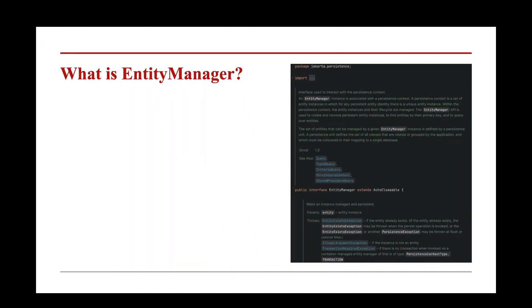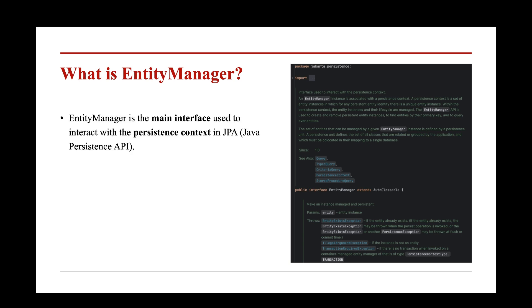So first things first, what is the Entity Manager? The Entity Manager is the central interface you'll use to interact with what's called the Persistence Context in JPA, Java Persistence API. Think of the Persistence Context as a kind of holding space or a first-level cache for your entities. If the Persistence Context is the holding space, then the Entity Manager is like the front desk of your JPA setup — it's the object you'll talk to when you want to do anything with your entities in relation to the database.